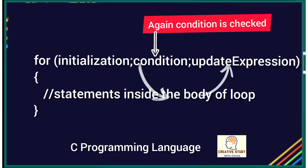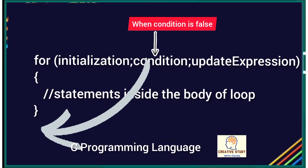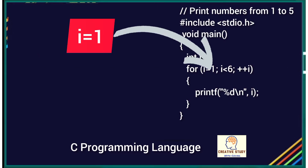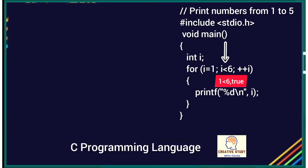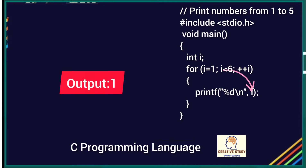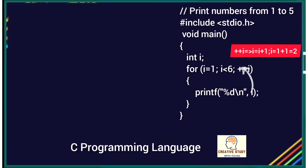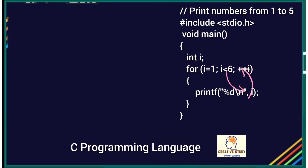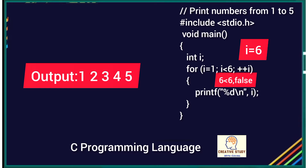The condition is checked again; if true, the statements inside the for loop execute and the update expression is updated. This process continues until the condition is false, at which point the loop terminates. For example, i is initialized to one — this runs only once. One is less than six is true, so the body executes and prints one. Then i++ makes i two; two is less than six is true, printing two. This continues until i becomes five. When i becomes six, six is less than six is false and the for loop terminates.